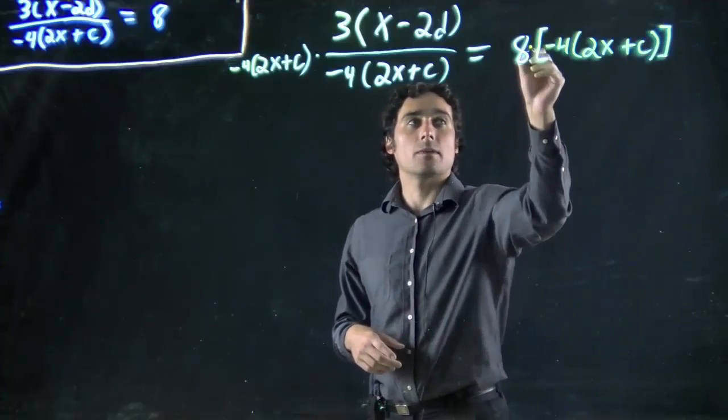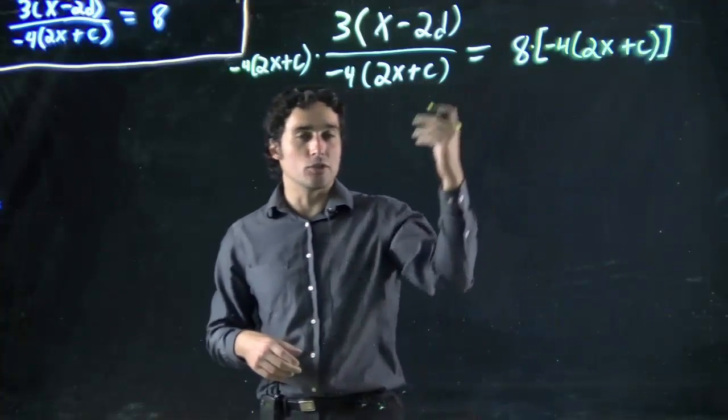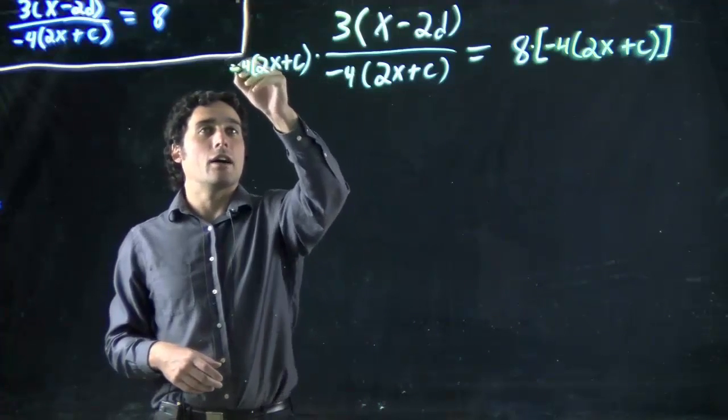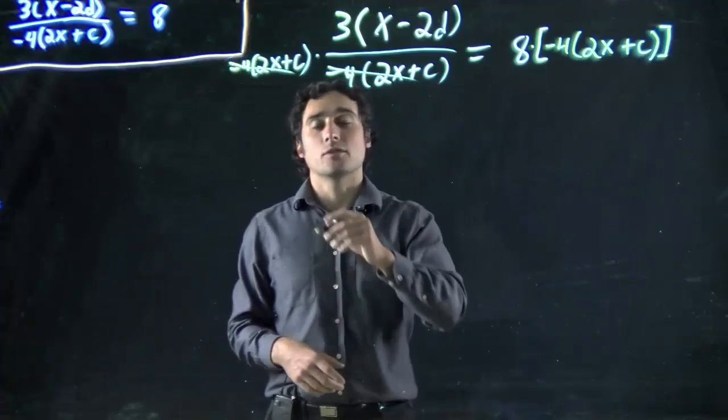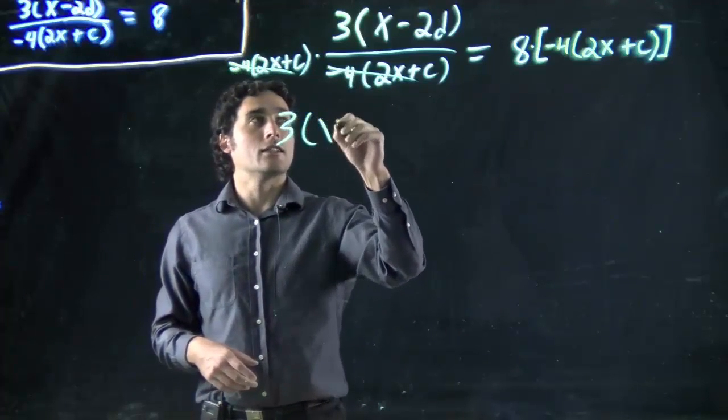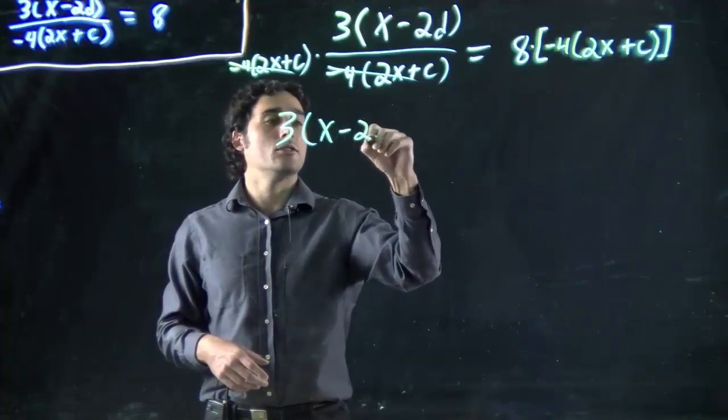Great. So I'm multiplying 8 by that. As always, I'm using my dots when I have x's. So, now I multiply this, these two will cancel. So all I'm left with on the left hand side here is 3 times x minus 2d.